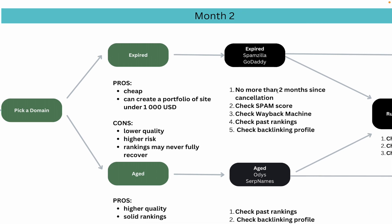There is some overlap — some domains listed on GoDaddy auctions will also be in SpamZilla. You want to buy an expired domain that hasn't passed the two-month mark since its cancellation. Check the spam score, go to the Wayback Machine and check how the website looked. For example, if it's a dog-niche website but the Wayback Machine shows it was selling sex toys, I would stay away unless it still has amazing niche-related rankings. You can check past rankings and backlinking profiles — the free option is the Hoth suite of SEO tools; the paid option is Ahrefs or SEMrush.